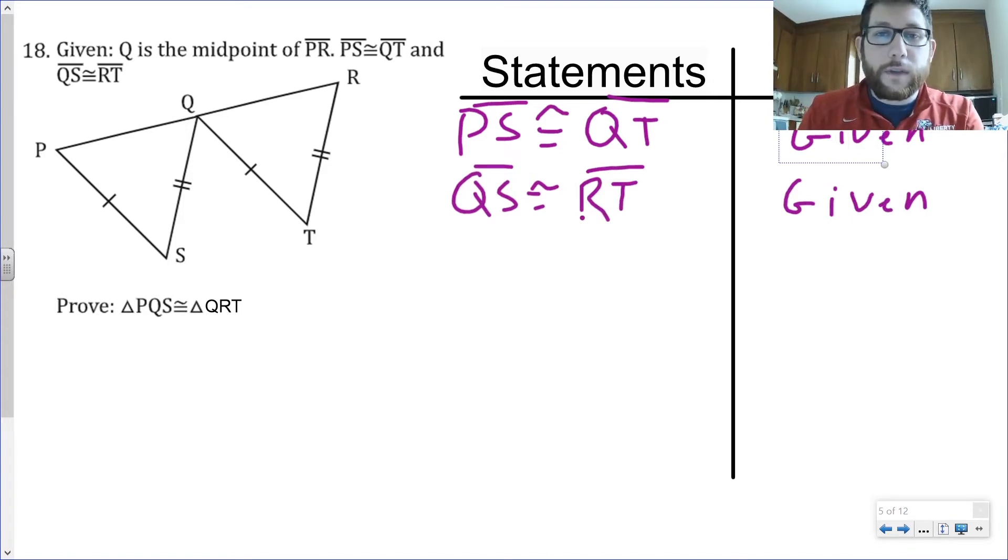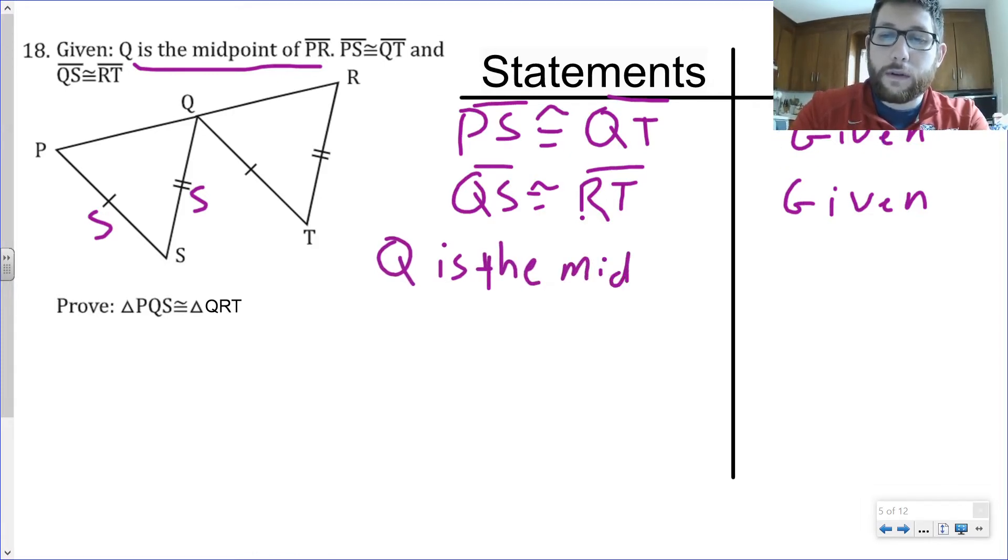Let's go ahead. As always, let's start with our given statements. So I know that PS is congruent to QT, and that's given. I also happen to know that QS is congruent to RT, and that's also given. The next thing we're going to do is add our third statement.